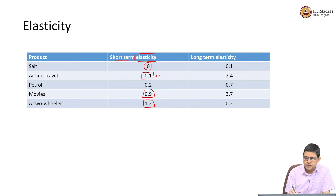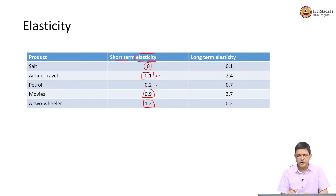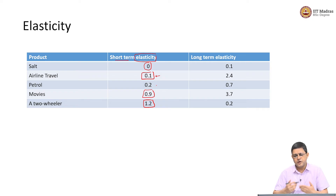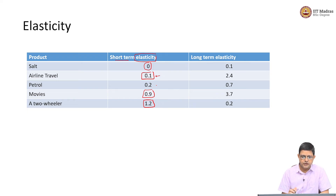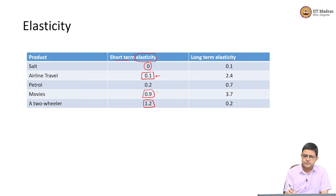For movies, if the movie tickets are expensive I may postpone — I may say let me watch TV at home today instead of buying a 500-rupee movie ticket, or go to a friend's house. I may want to find alternatives. Whereas for salt there is actually no alternative. So in those cases I may expect a larger short-term elasticity.